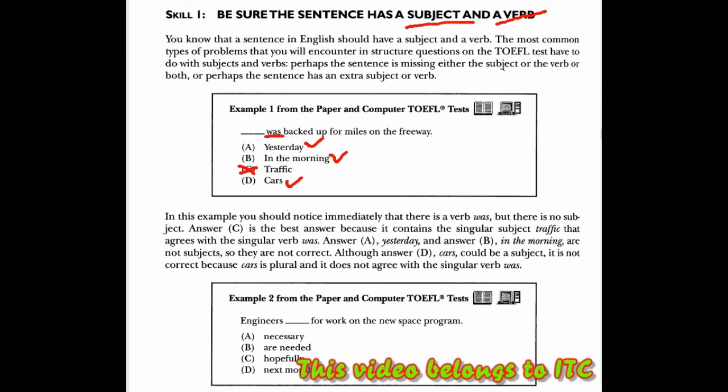Lalu pada bagian contoh 2, kita melihat bahwa subjeknya di sini sudah ada, yang masalah adalah kata kerjanya, verbnya. Di sini adalah B. Mengapa adalah B? Karena engineers, dia lebih dari satu, maka dia memakai are. Kalau di sini tidak bisa, karena necessary adalah kata sifat, harus memakai to be. Hopefully adalah kata keterangan. Mana predikatnya, kata sifat atau kata kerjanya tidak ada. Next month adalah kata keterangan waktu, tidak dapat menjadi predikat. Maka yang benar untuk bagian ini adalah B.